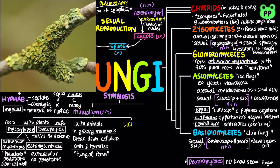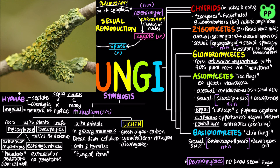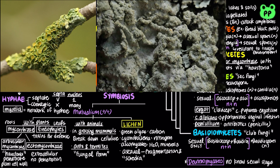A lichen is a symbiotic association between photosynthetic microorganisms and fungus. Green algae provide carbon compounds through photosynthesis, cyanobacteria provide organic nitrogen, and the fungi — typically ascomycetes — provide the environment for growth, including water and minerals. The fungi of lichens can reproduce sexually and asexually. Asexual reproduction is by fragmentation or the formation of soredia, which are small clusters of hyphae with embedded algae.